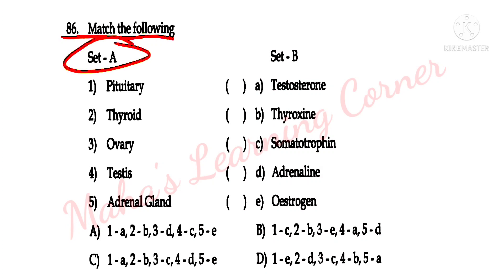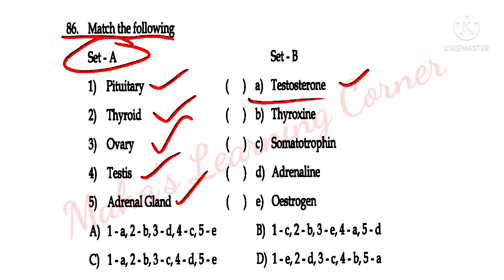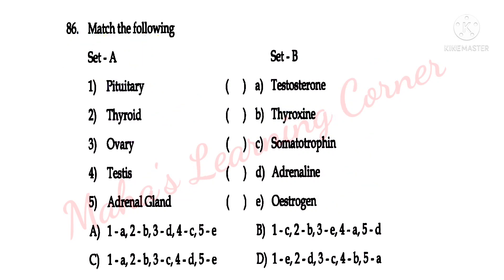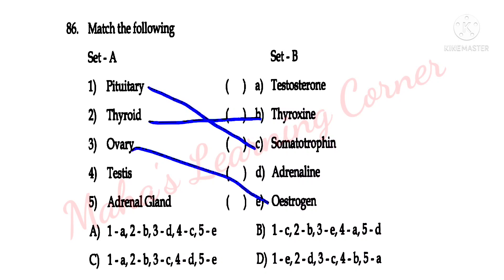Match the following — Set A: endocrine glands: pituitary, thyroid, ovary, testis, adrenal gland. Set B: hormones: testosterone, thyroxin, somatotropin, adrenalin, estrogen. Pituitary gland secretes somatotropin; thyroid secretes thyroxin; ovary secretes estrogen; testis secretes testosterone; adrenal gland secretes adrenalin. Correct answer: option B.